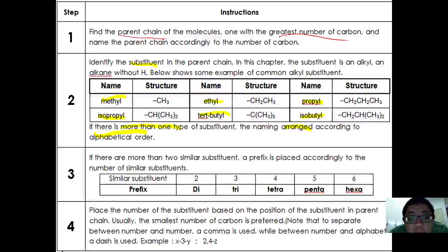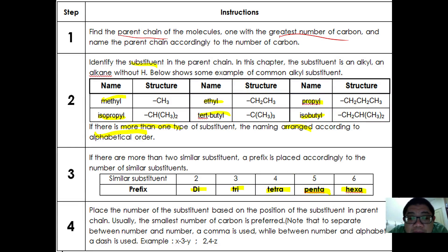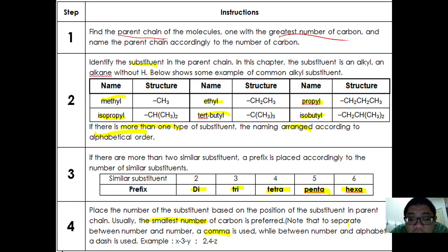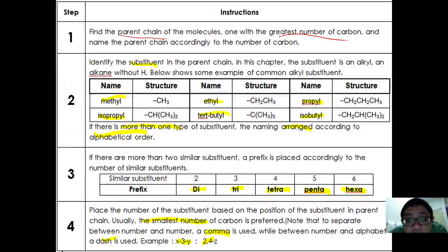The third step: if there are two or more similar substituents, a prefix is placed — di for two, tri for three, tetra for four, penta for five, and hexa for six similar substituents. The fourth step is to number the substituents on the parent chain, preferring the smallest numbers. Separate number from number with a comma, and number from letter with a dash.